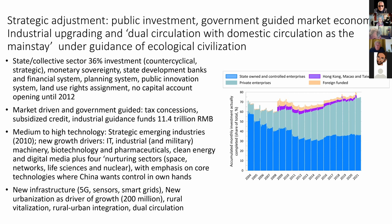China's rate of accumulation will also continue because of urbanization. Something like 200 million people have yet to be urbanized. As they are, there will be large investment in new infrastructure, 5G sensors, and smart grids. There will also be programs of rural vitalization and rural-urban integration, closely related to the new strategy of dual circulation. There is a series of factors which suggest that China's rate of accumulation and growth will continue to be relatively fast.